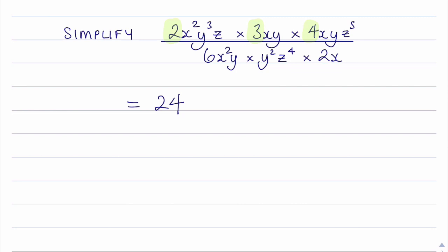I'm now going to work my way through the letters, the variables, alphabetically. So I'm going to deal with the x terms. So I've got x squared, I've got the x, and I've got another x here. So I've got x to the power of 4.